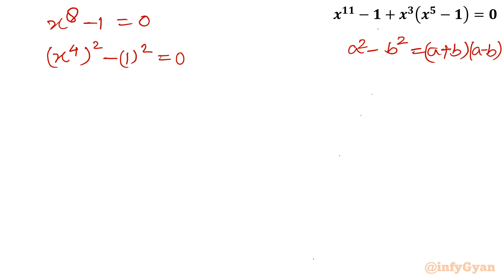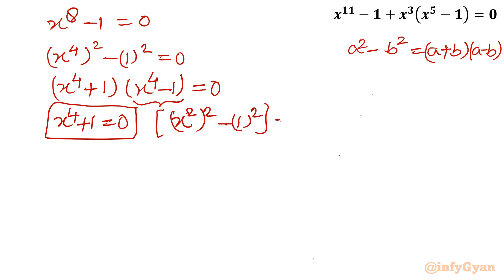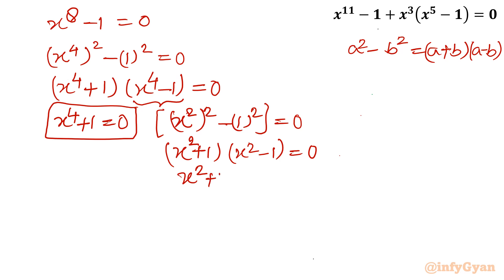So from the difference of squares I write (x^4 plus 1)(x^4 minus 1) equal to 0. For x^4 minus 1 equal to 0, I write (x^2)^2 minus 1^2 equal to 0, which gives (x^2 plus 1)(x^2 minus 1) equal to 0. From x^2 minus 1 equal to 0, x^2 equals 1, so x equals plus or minus 1.